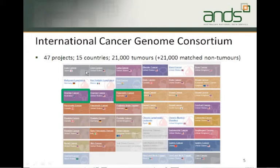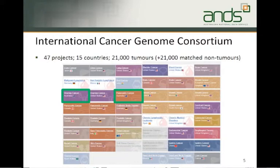You can see here a variety of cancer types — liver, lung, bladder, blood, bone, and so on. Australia is involved in sequencing two types: ovarian cancer and pancreatic cancer. What they also need to do is compare the DNA sequence from the tumorous tissue to non-tumour tissue, so they also need to sequence DNA from matched non-tumours. That's a lot of data effectively.